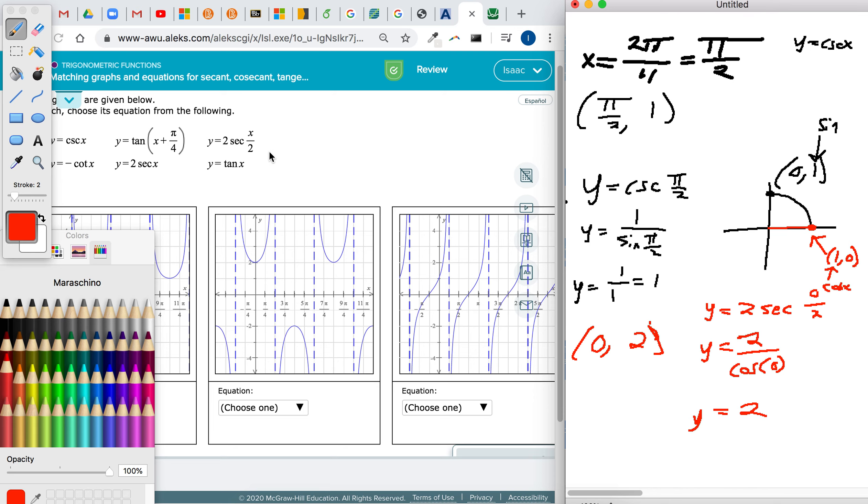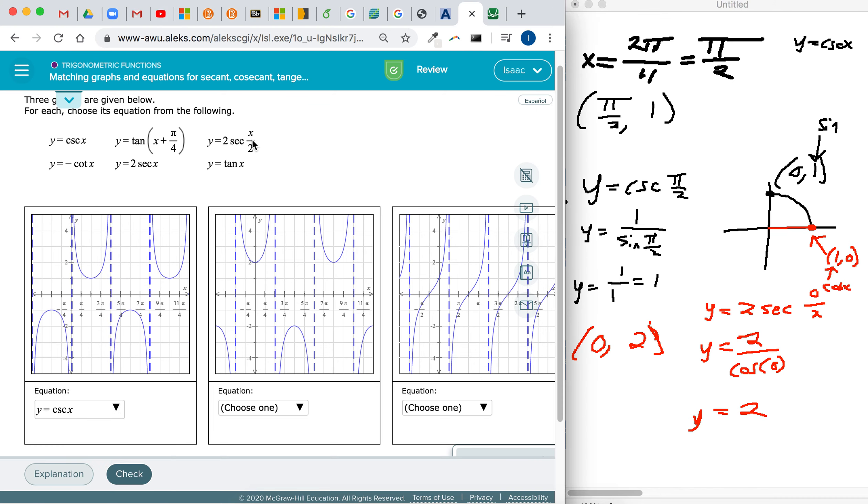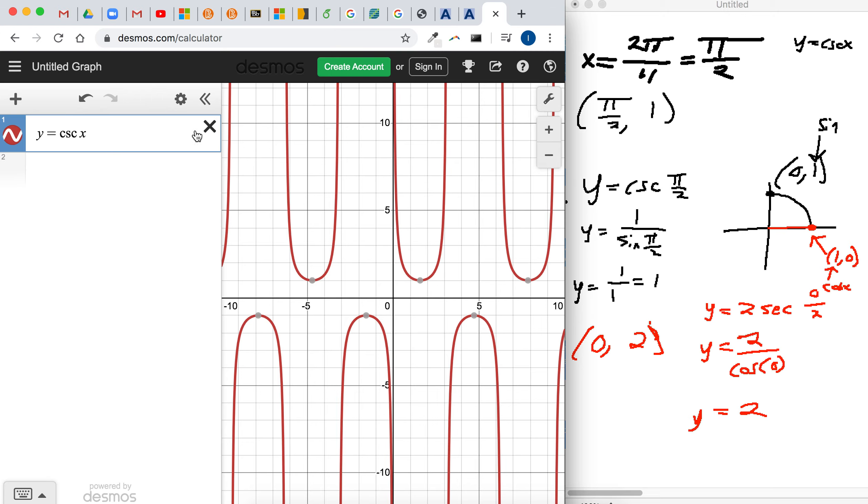So just a quick recap: we plugged in 0 in for x into this equation, we got out 2. So this is a possible option for this answer. You'd want to go check the other ones just to be sure or check it with a graphing calculator.